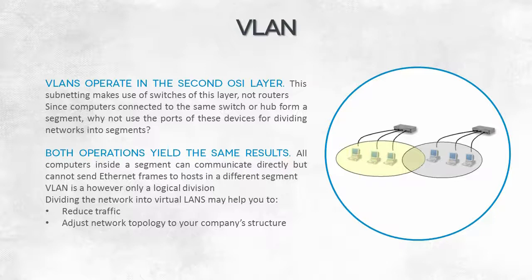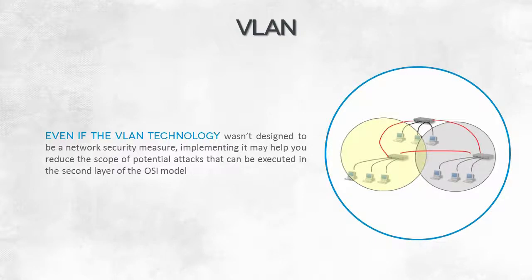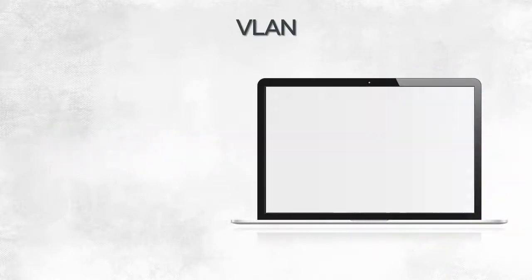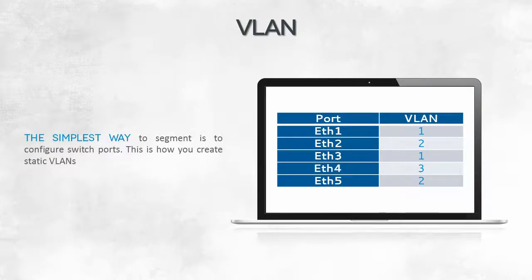Such a division is commonly applied for security reasons. However, this technology was not designed as a security technology — rather, it's a solution for a more effective and efficient local network. This solution has been implemented in two ways. The simplest kind of network partitioning, the virtual local area network, or VLAN, is a static partitioning.